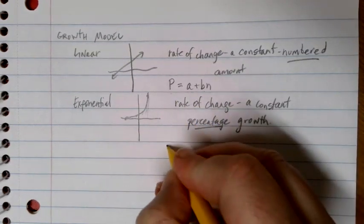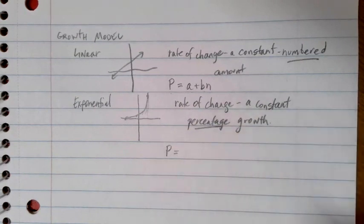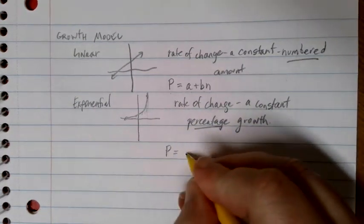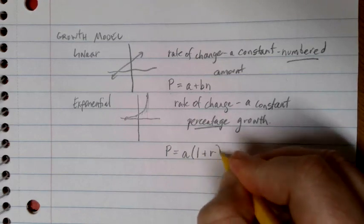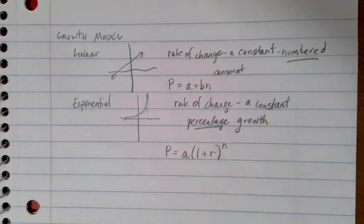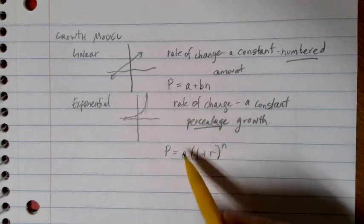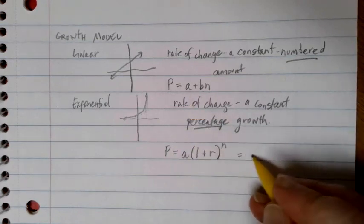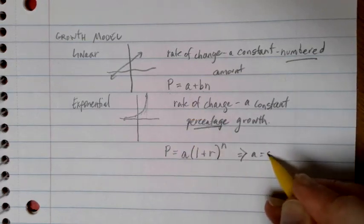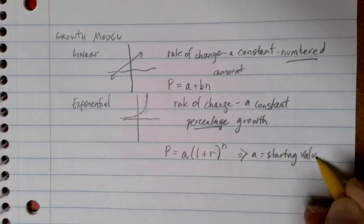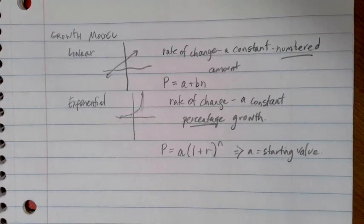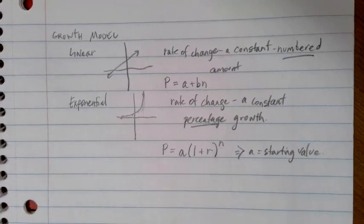For an exponential equation, there is also a general growth model that we can use, and it looks like this: P is equal to A times 1 plus R to the nth power. In this case, A is just like it was up here. Our A value is our starting value. So however we define what that starting value is going to be, that's going to be our A value.